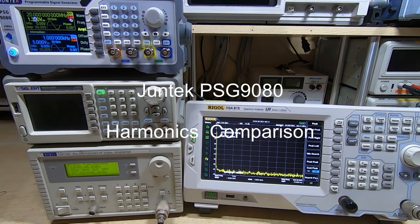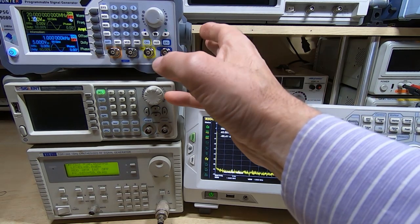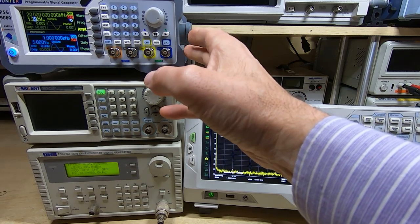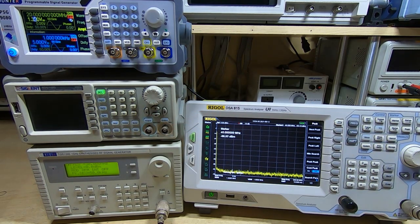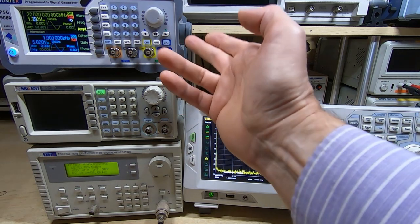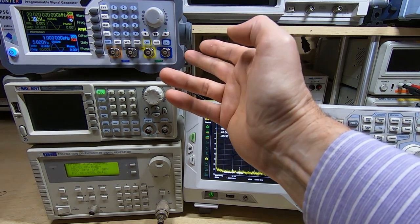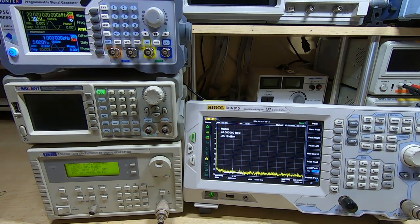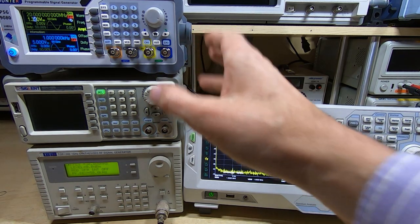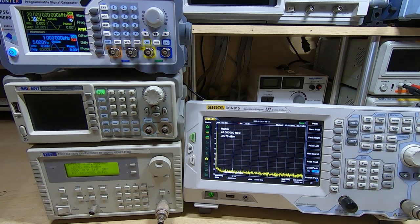A short time ago I posted a video showing this Juntek programmable signal generator, the PSG 9080. It's quite an interesting device, very cheap, and essentially an arbitrary signal generator and frequency counter. It's 14-bit resolution, 300 mega samples per second, and goes up to 80 megahertz output for the sine wave. I didn't do a full review, just a very brief introduction to make people aware that it existed. It's quite cheap and I think is a very suitable entry-level signal generator for anyone trying to get into electronics.